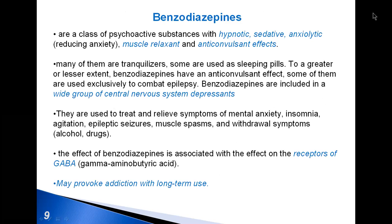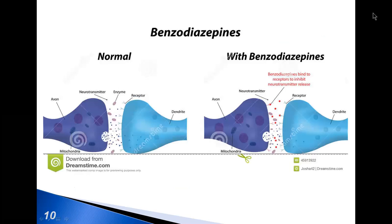Benzodiazepines are a class of psychoactive substances with hypnotic, sedative, anxiolytic, muscle relaxant, and anticonvulsant effects. They are included in the broad group of central nervous system depressants, as are barbiturates. The effect of benzodiazepines is also associated with GABA receptors. Benzodiazepines bind to benzodiazepine receptors located between alpha and gamma subunits of GABA-A receptor channel complexes. GABA must be present for benzodiazepine effects to be detectable; benzodiazepines are allosteric GABA-A receptor modulators, not true agonists.